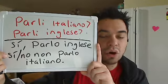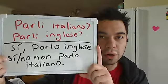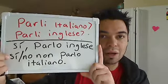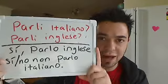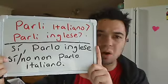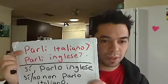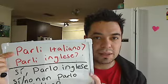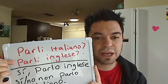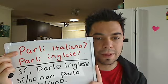To respond: 'sì, parlo inglese' or 'sì, parlo italiano.' If you don't speak Italian, you can say 'no, non parlo italiano.' 'Non' after 'no' means 'not' or expresses 'I don't.' So: 'no, non parlo italiano.'